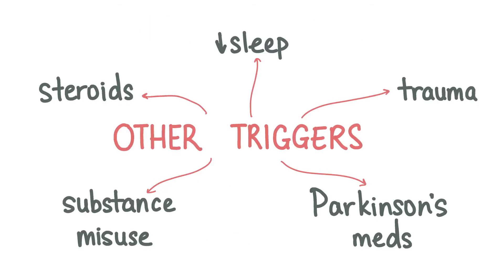Psychosis can also be triggered or induced by prescribed medications like steroids and Parkinson's medications, a traumatic experience, a lack of sleep, alcohol abuse, and use of substances like cannabis and MDMA. Organic causes for psychosis include delirium, dementia, Huntington's, neurosyphilis and brain tumours.